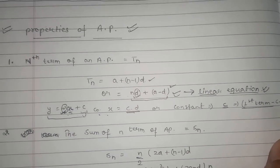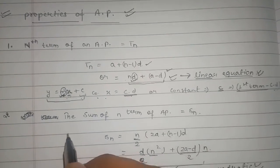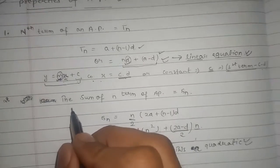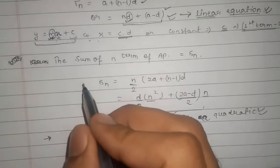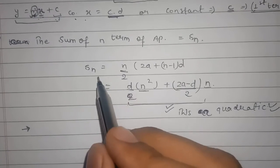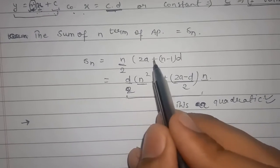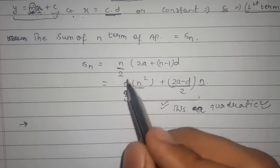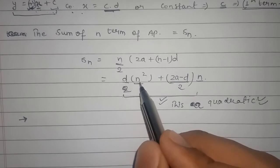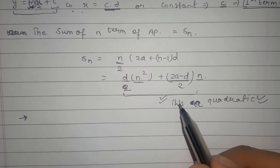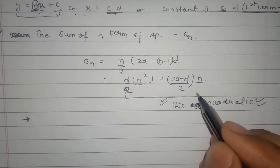Similarly, the second rule is the sum of n terms of an AP, that is Sn, which is written as Sn = n/2[2a + (n-1)d]. And solving we get d/2 n² + (2a-d)/2 n. By seeing it we conclude that it is a form of quadratic equation.